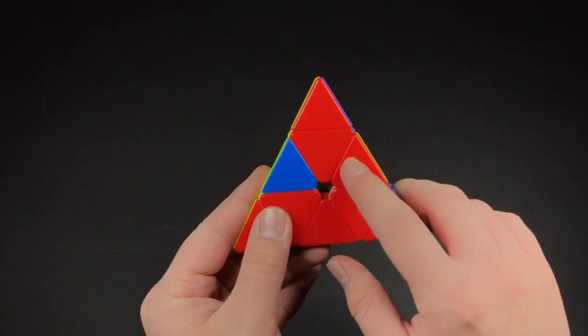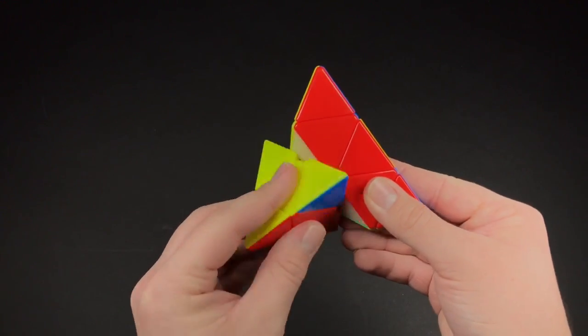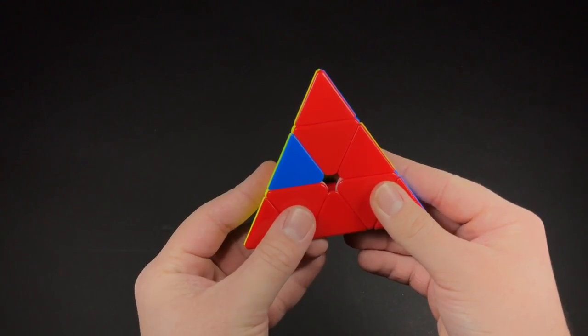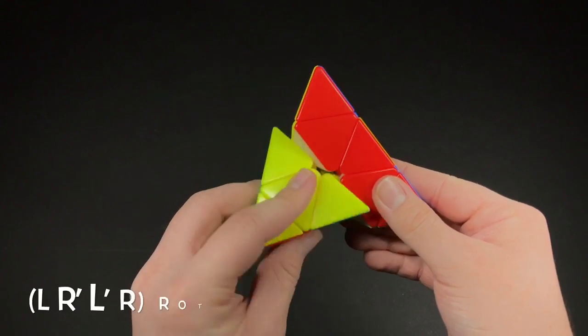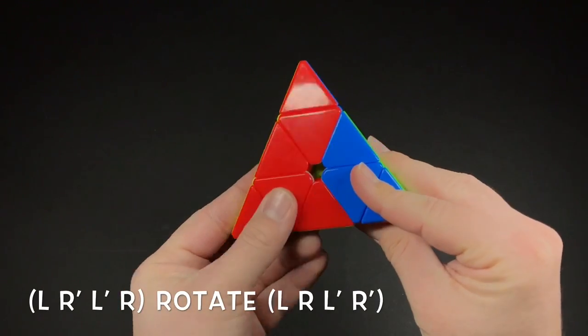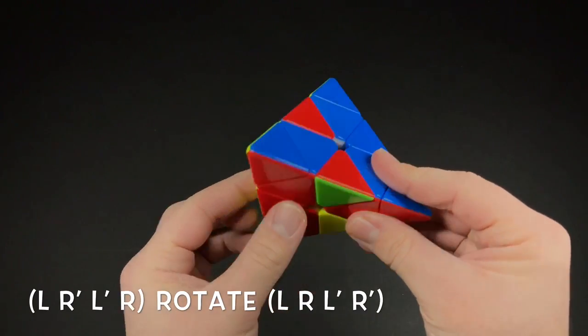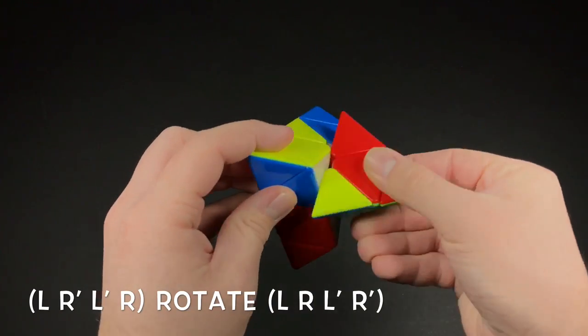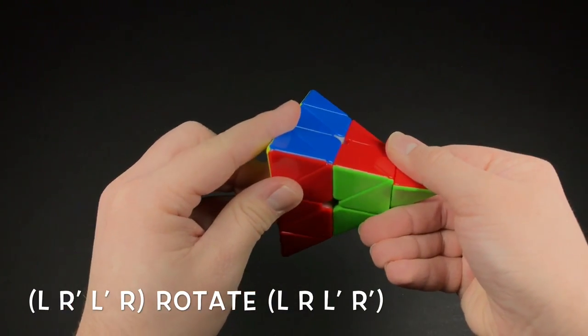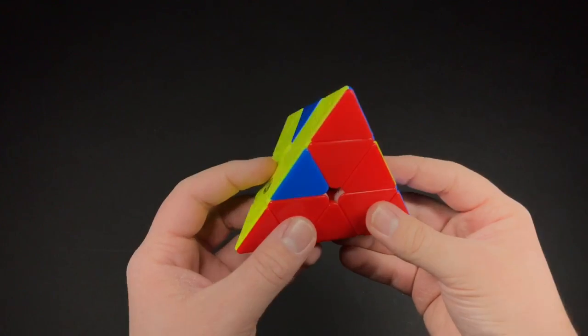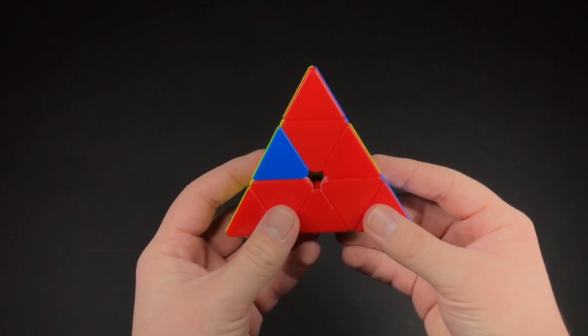So then, since the matching one's on the right, you would start turning with the left side. So like this. Rotate. Rotate. Okay, and then performed fast.